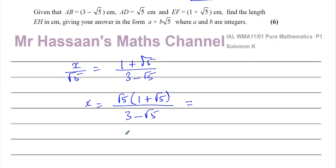What we have to do now is rationalize the denominator. I'm going to multiply the denominator by (3 + √5), because you have to multiply by the conjugate to rationalize. The whole point is to get rid of the square root in the denominator. When you have something in this form, you use the principle of difference of squares.